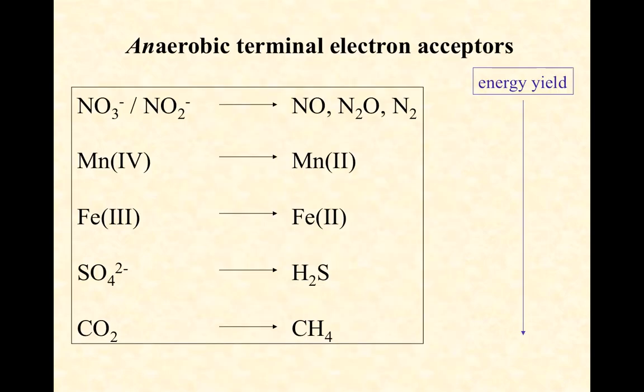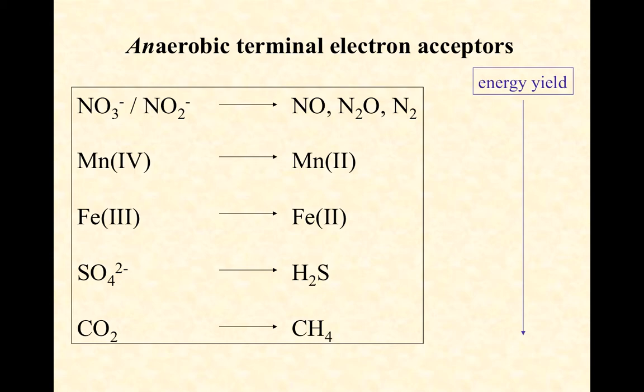Anaerobic respiratory bacteria can carry out full cell respiration using something other than oxygen as their terminal electron acceptor. In nature, the most common alternatives include nitrate or nitrite, which can be reduced into gaseous forms of nitrogen — NO, N₂O, or N₂. Manganese (IV) and iron (III) can be reduced to manganese (II) or iron (II). These are particularly odd because under typical neutral conditions, manganese oxides and iron oxides are solid precipitates.